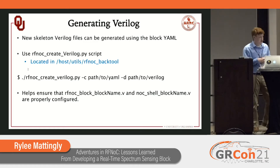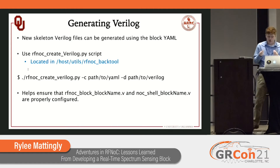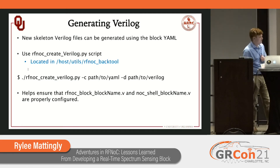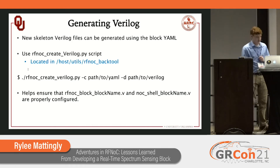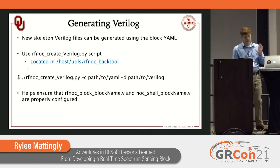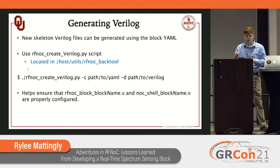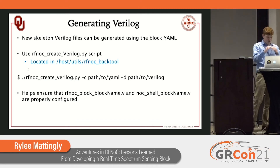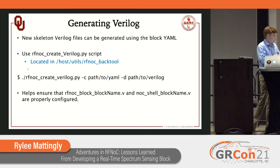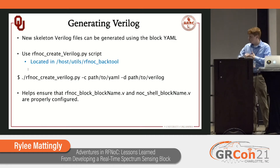We want to regenerate the .v files so that they reflect what our block should be. For this, we use the rfnoc_create_verilog.py Python script that is in the utils folder in the UHD directory. We call that script, giving it the path to the block description file and the path to where that Verilog should be written. By generating from the block YAML file, you make sure that your block skeleton is exactly what you expect it to be with no extraneous weirdness.